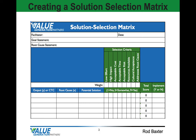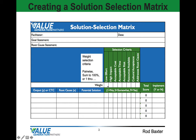Here's an example of a solution selection matrix. First we're going to determine what the selection criteria is, and then we're going to weight that selection criteria. You may use a pairwise comparison, or you may sum the weights to a hundred percent, giving each criterion some percentage of a hundred percent. You may also simply rank these one through the number of criteria.